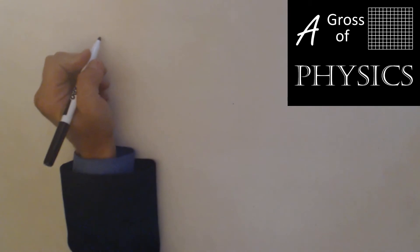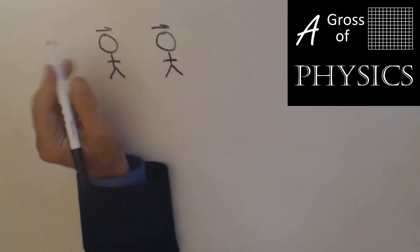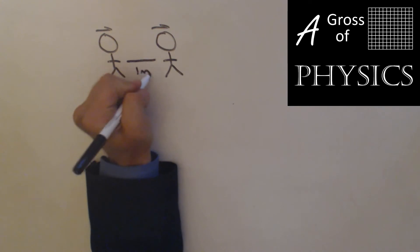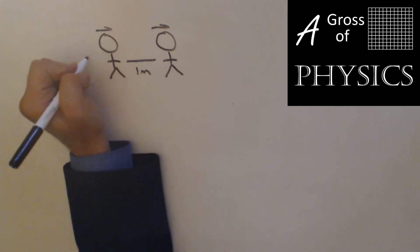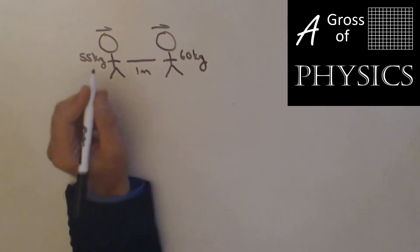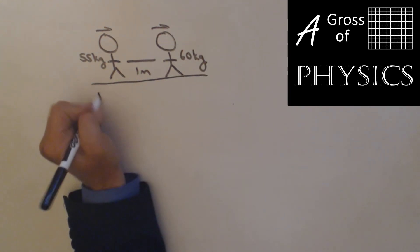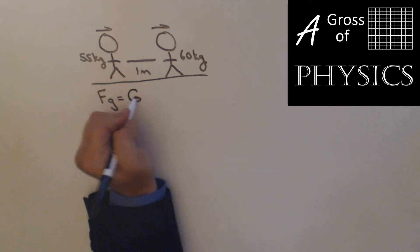Let's find out how attractive two people really are. We'll take two people and we'll have them stand a meter apart. We'll say that this person is 55 kilograms and this person is 60 kilograms. So the question is how attractive are these people? Well we can find that using physics.